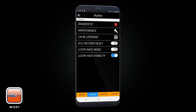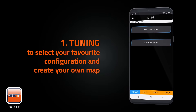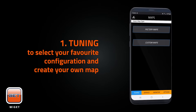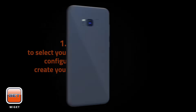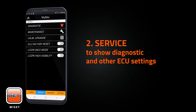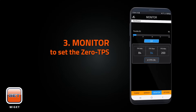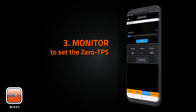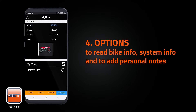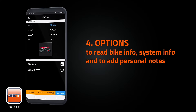There are four main features: Tuning, to select your favorite configuration and create your own map; Service, to show diagnostic and other ECU settings; Monitor, to set the zero TPS; and Options, to read bike info, system info, and to add personal notes.